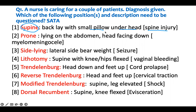Back lay with a small pillow - the back lay is appropriate, but the small pillow is inappropriate for somebody with a spine injury. For supine position, you lay on your back with a little pillow under your head to support it. But if you have a spine injury, you cannot have a pillow - you lay flat, back lay, and they will take the pillow out. There shouldn't be a pillow under the head, so this is one you will question.